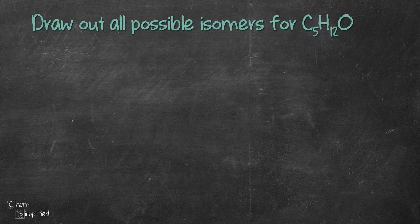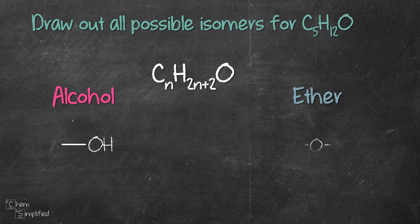The question is asking to draw out all constitutional isomers for C5H12O. Since this chemical formula fits the general formula of CnH(2n+2)O, that means C5H12O can be an alcohol with OH group or an ether which has an oxygen sandwiched between two carbons.